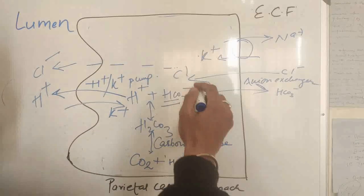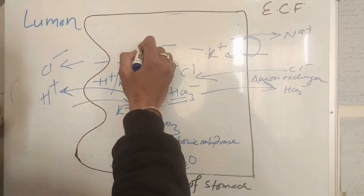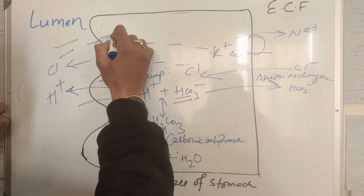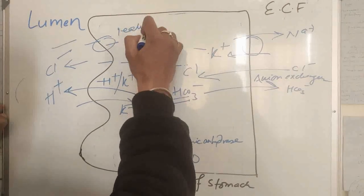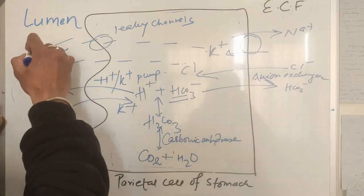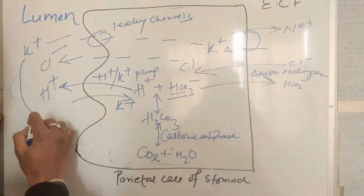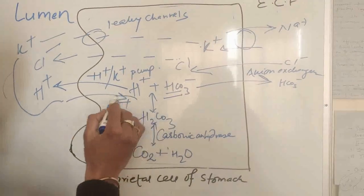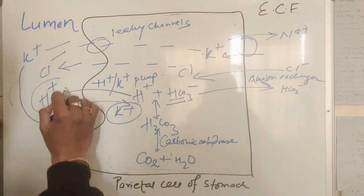This potassium gets leaked to the lumen via leaky channels. And this potassium is used by this hydrogen-potassium pump to pump potassium inside in exchange for protons.